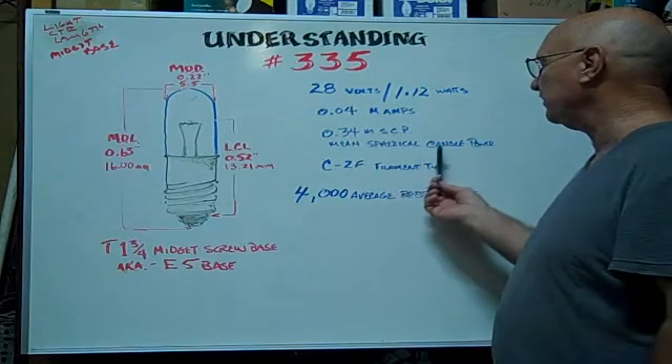The volts are rated at 28 volts. The wattage is 1.12, milliamps are 0.04. The mean spherical candle power is 0.34. The filament type is a C2F. The average rated hours, 4,000 hours.